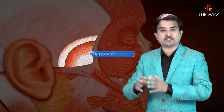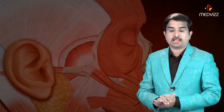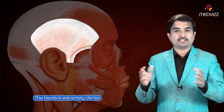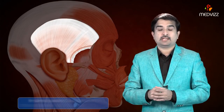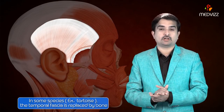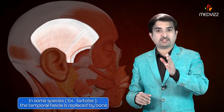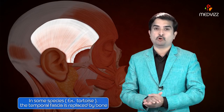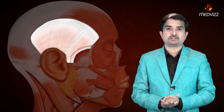The deep surface of the temporal fascia gives origin to some of the fibers of the temporalis muscle. The fascia is extremely dense in some species — for example, in the tortoise, the temporal fascia is replaced by bone.